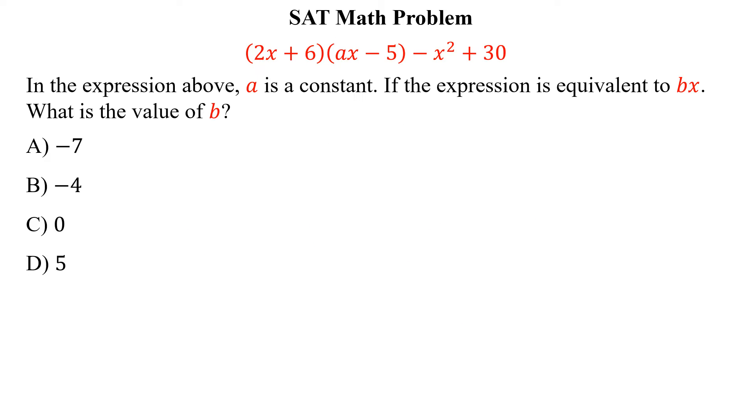The question is, in the expression above, A is a constant. If the expression is equivalent to Bx, what is the value of B? So, we write the expression (2x + 6)(Ax - 5) - x² + 30 equivalent to Bx.